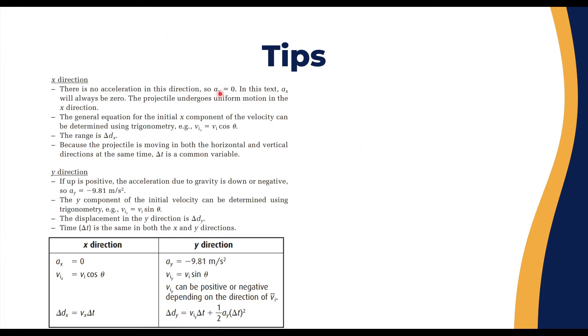Now for the x-direction, there is no acceleration, so always a_x equals zero. The projectile undergoes uniform motion in the x-direction. The general equation for the initial x-component of velocity can be determined using trigonometry: v_ix equals v_i cos θ. And the range, which you need to remember, equals Δd_x. That's how far the ball goes from the moment it left its initial point to the moment it hits the floor again.